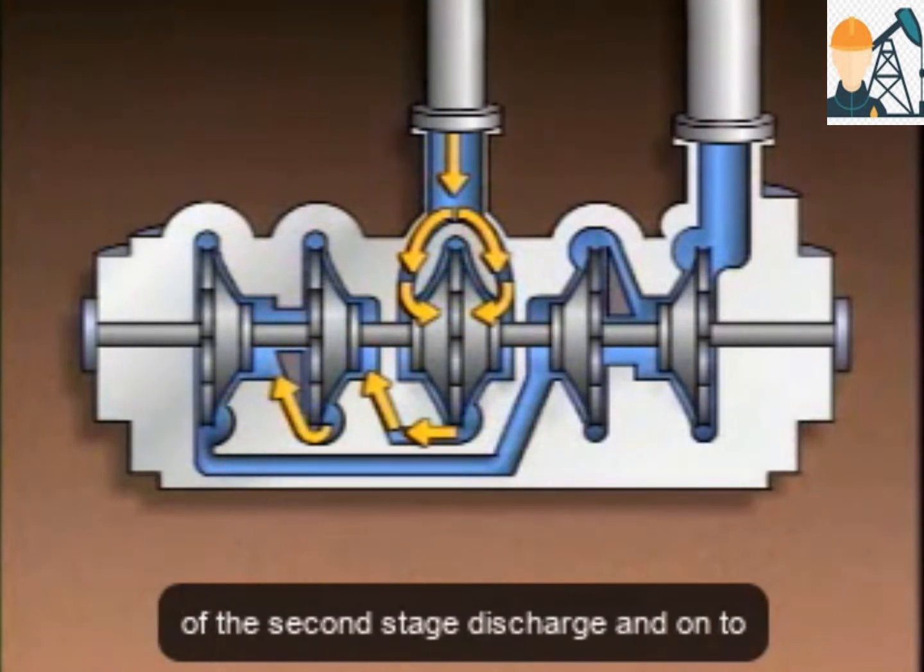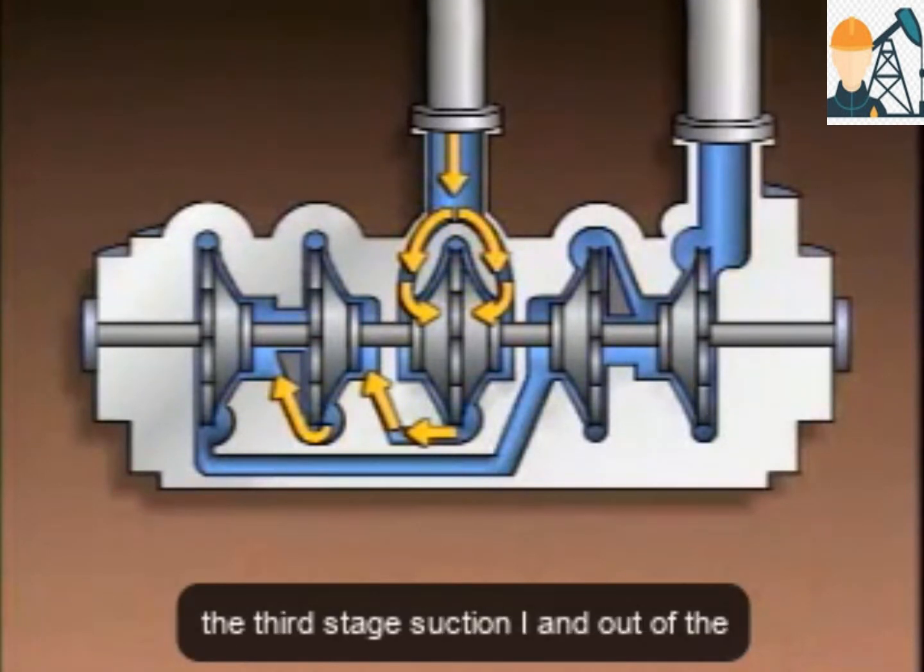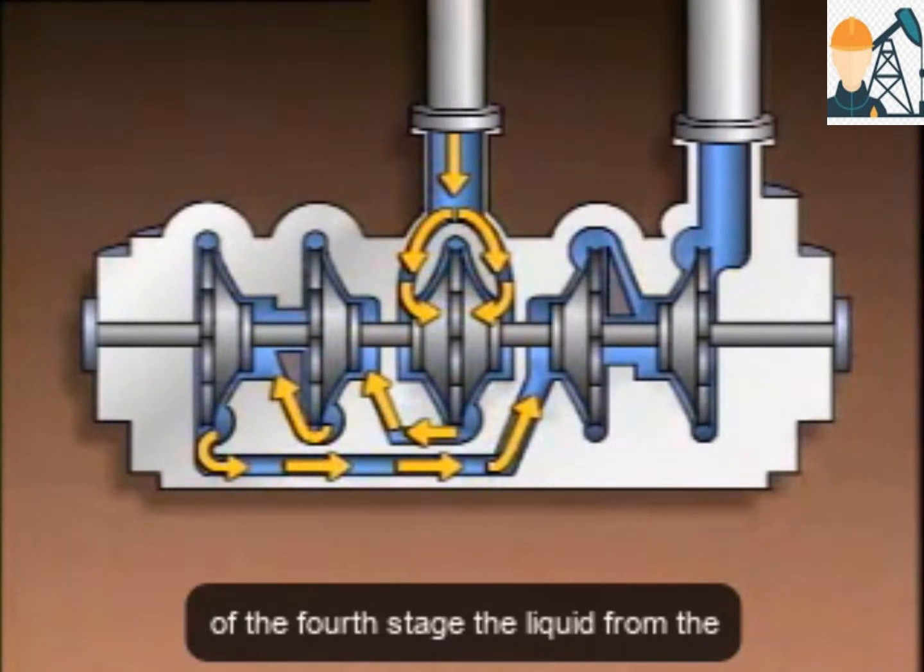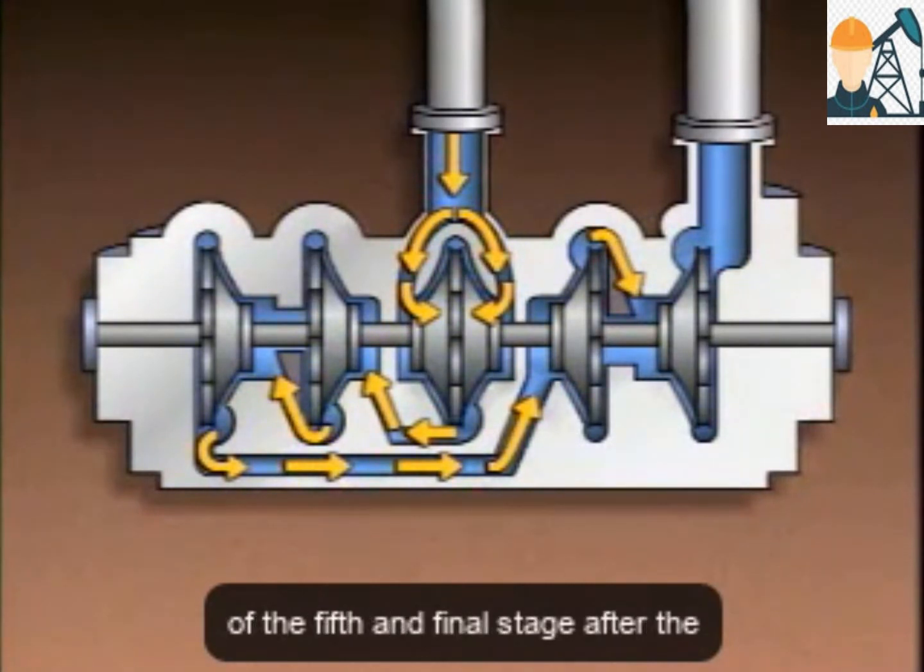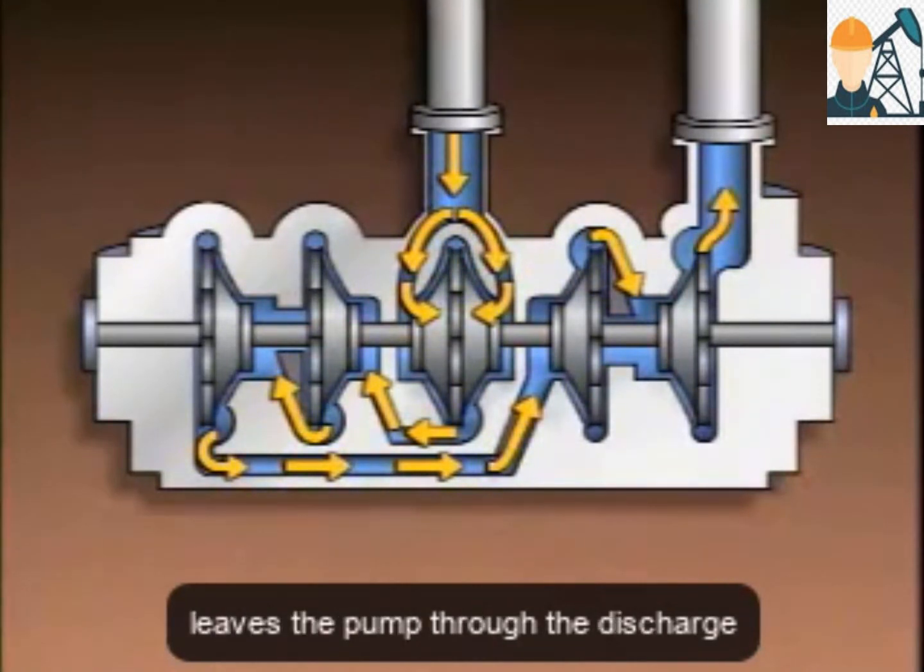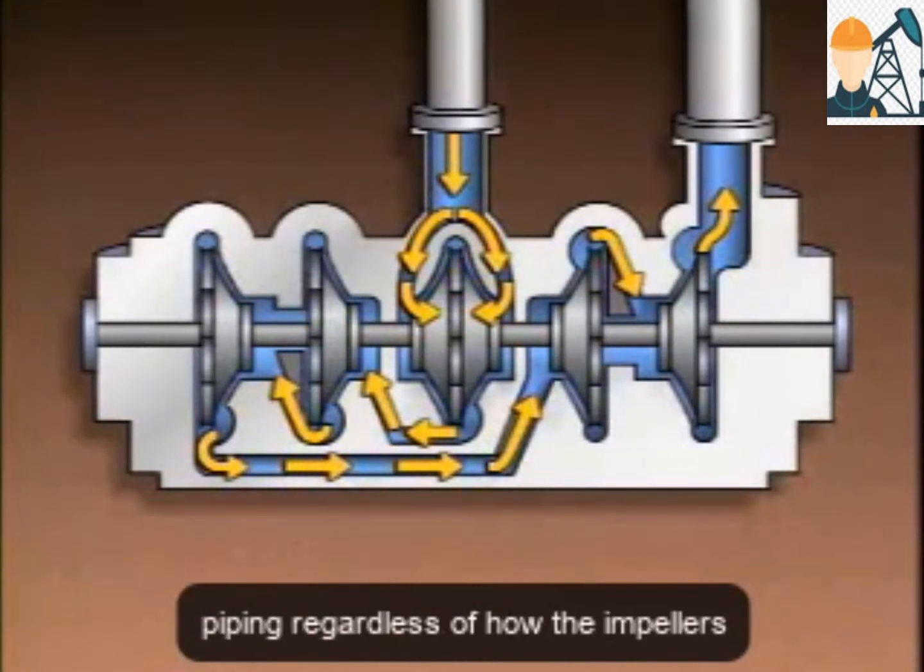Then, out of the second stage discharge and onto the third stage suction eye. And, out of the third stage discharge to the suction eye of the fourth stage. The liquid from the fourth stage is routed to the suction eye of the fifth and final stage. After the liquid passes through the fifth stage, it leaves the pump through the discharge piping.